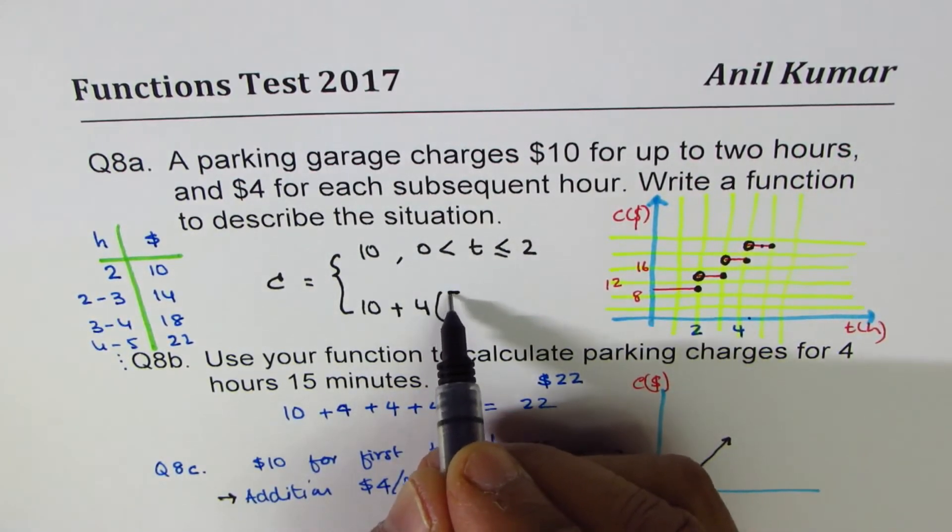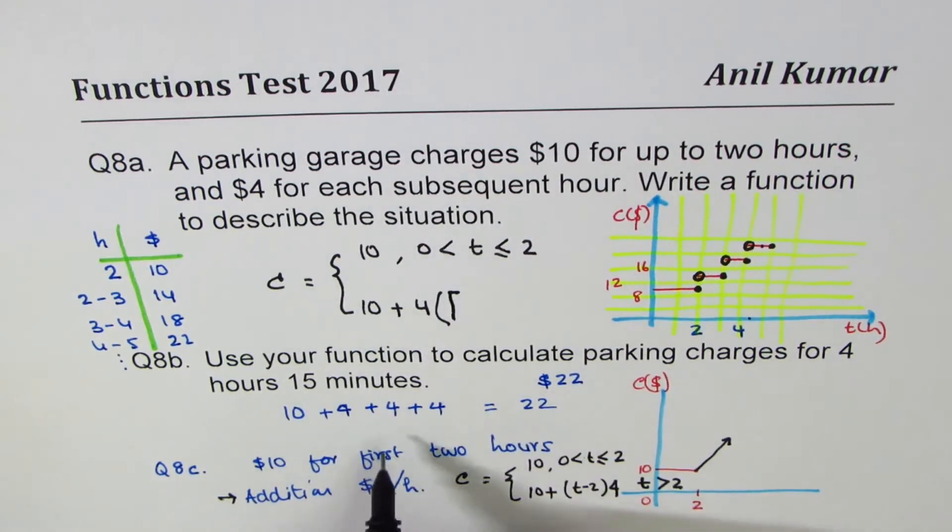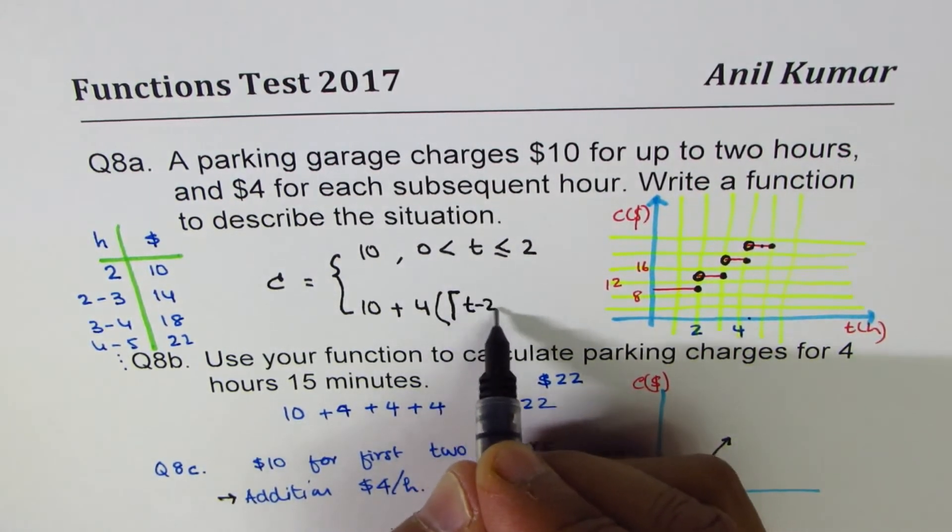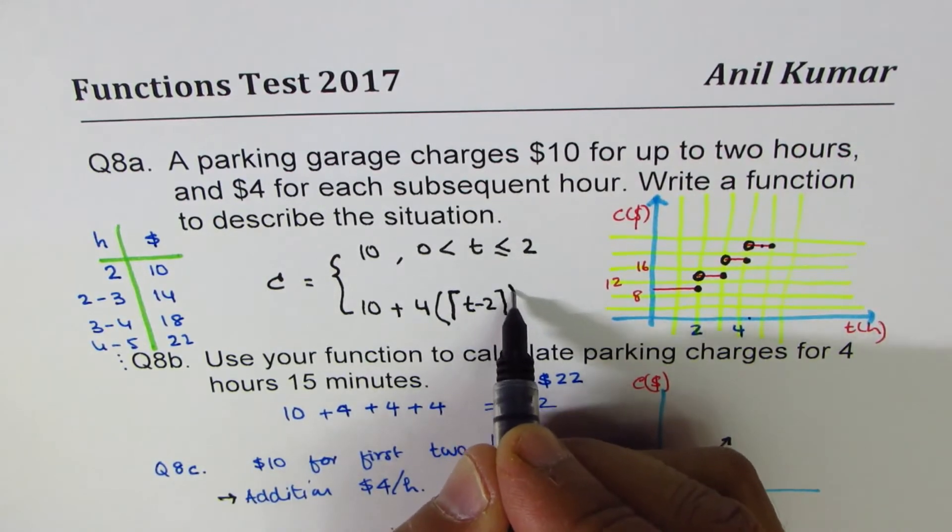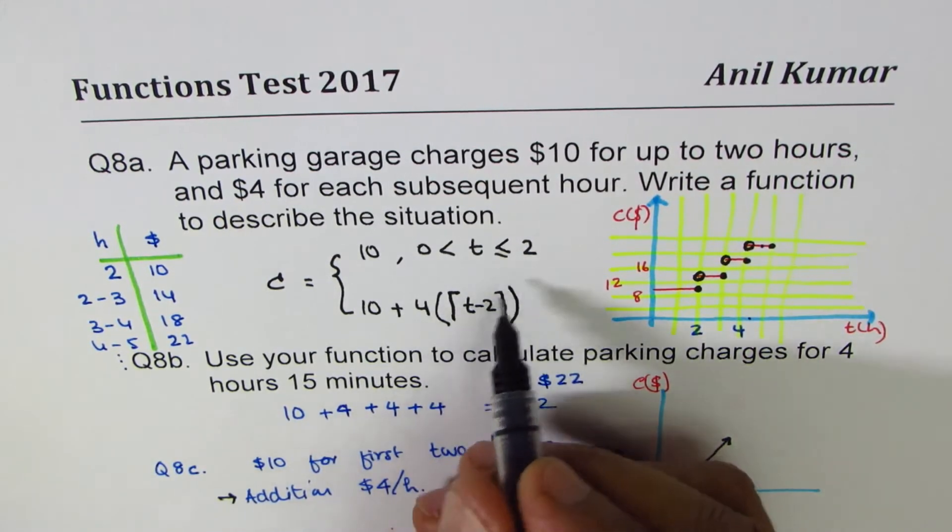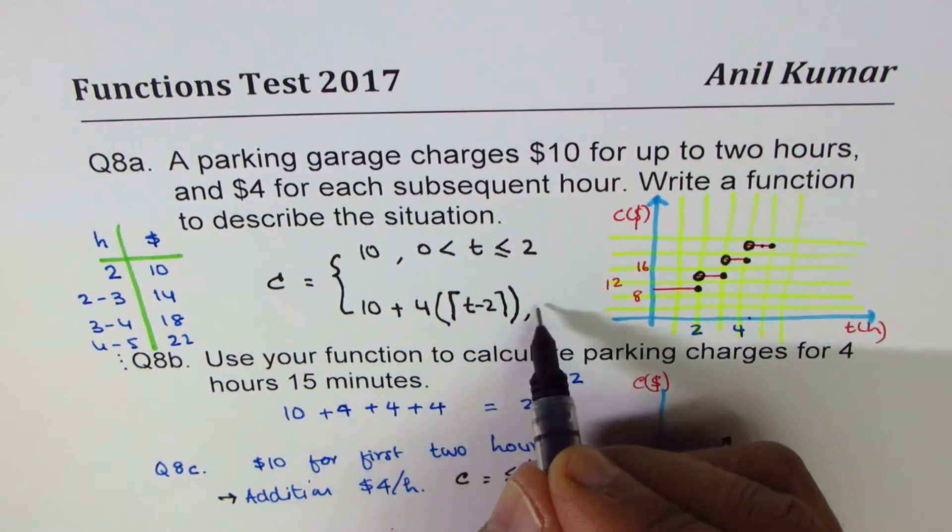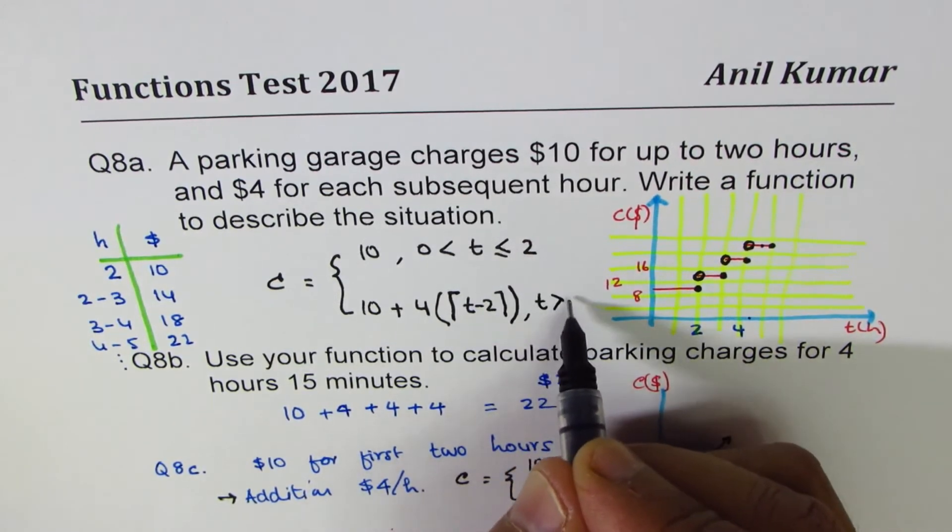Ceiling function. So time minus 2, ceiling function. It rounds to higher number. When t is greater than 2. That's the ceiling function.